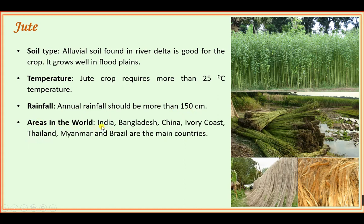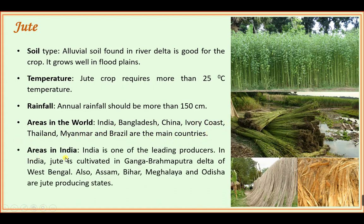Areas in the world where jute is grown well include India, Bangladesh, China, Thailand, Myanmar, and Brazil as the main countries. India is one of the leading producers — actually the second largest producer in the world, with Bangladesh being the first. In India, jute is cultivated in the Ganga-Brahmaputra Delta of West Bengal, and also in Assam, Bihar, Meghalaya, and Odisha, mainly for trade purposes.